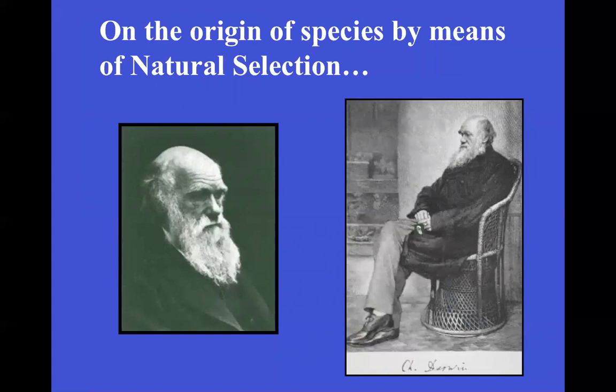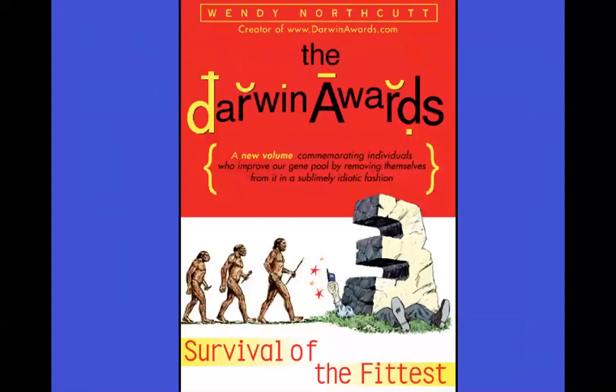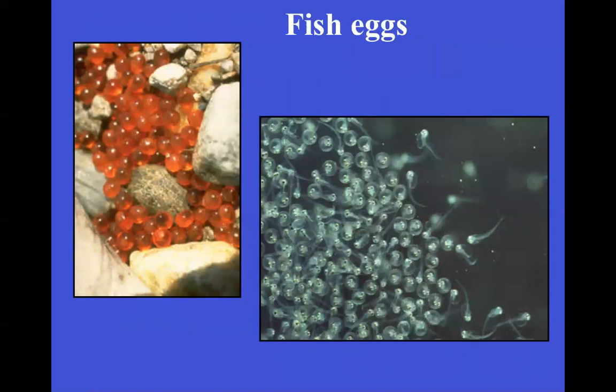These traits are inherited. However, many organisms do not live to grow up and reproduce due to a concept called survival of the fittest. In other words, more organisms are produced than live to grow up and reproduce. For example, a female fish lays hundreds of eggs, but only a certain percentage of them will survive to reproductive age.